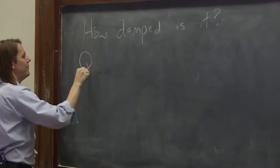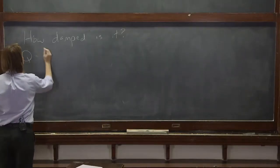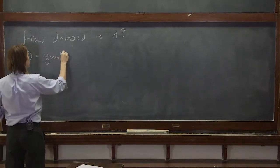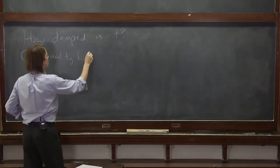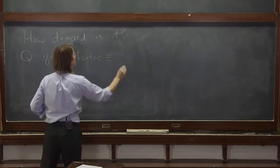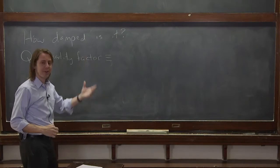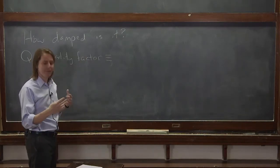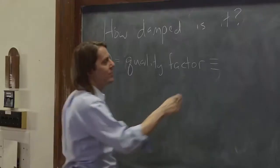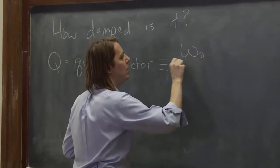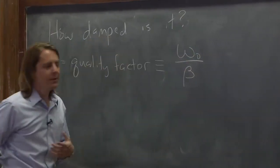You answer that with something called the quality factor, Q. It's called the quality factor. And as I alluded to on the previous board, it's a balance between the omega naught, how fast it oscillates, and beta, how fast it damps. So it's defined as actually the ratio of those two, omega naught over the damping parameter beta.